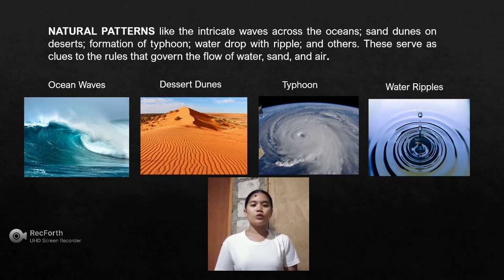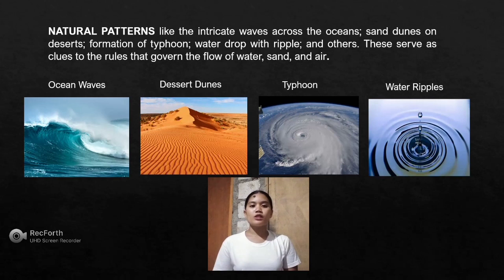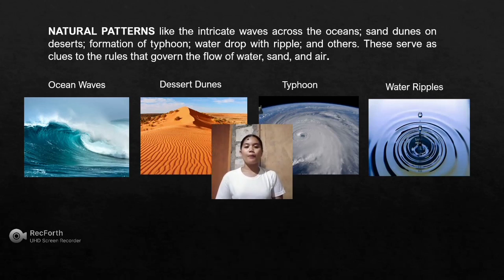These serve as clues to the rules that govern the flow of water, sand, and air. One of the most strikingly mathematical landscapes on Earth is found in the great sand oceans of the Arabian and Sahara Deserts. When wind blows steadily in a fixed direction, sand dunes form simple patterns such as transverse dunes, which look like ocean waves. If the sand is slightly moist and there is a little vegetation to bind it together, you may find parabolic dunes.